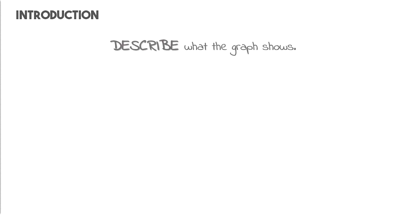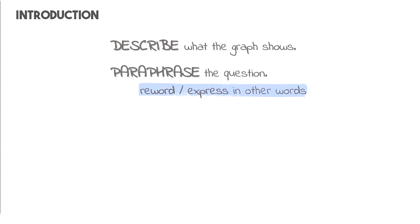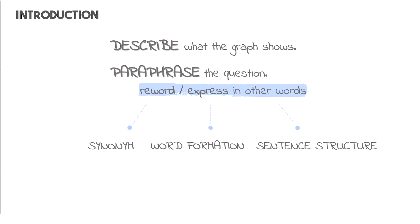Let's start with the introduction. In this part, you have to describe what the graph shows, and of course you have to paraphrase the question, which means that you have to reword or express the prompt in other words. We can use three ways such as synonym, word formation, and sentence structure on how to paraphrase. But for now, we will try to combine all three ways of writing an introduction. We have a separate video lesson about the basic structure of writing these parts, so please don't forget to check it out.